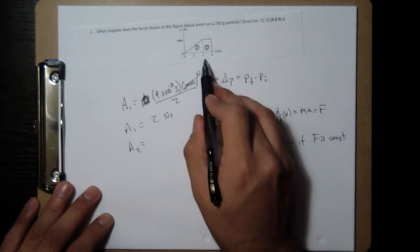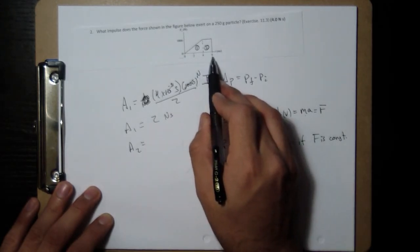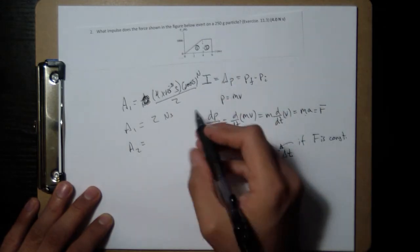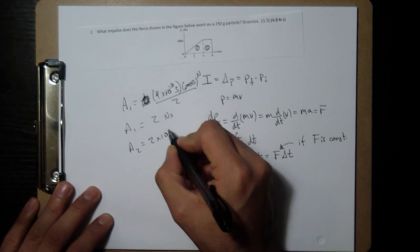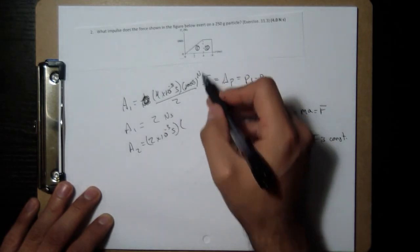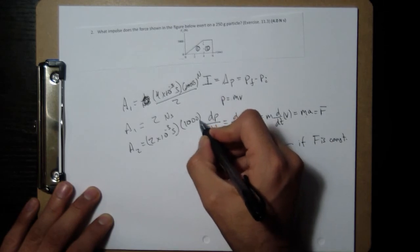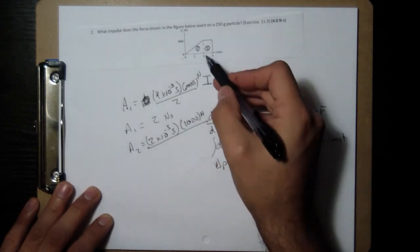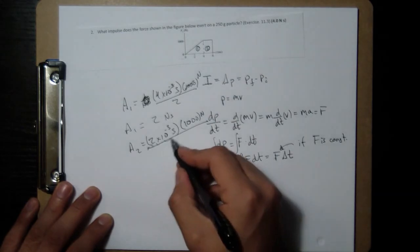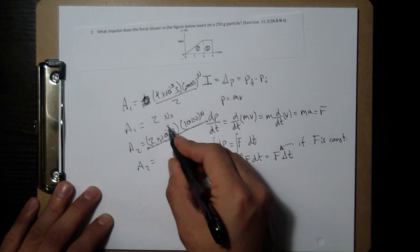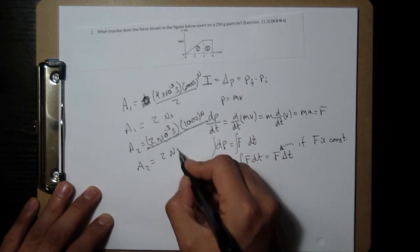The area for the second part is going to be 4 to 6, sorry, that's a time of 2 milliseconds. So 2 times 10 to the negative 3 seconds, similar. And height, 1000 Newtons. But this one, we don't divide by 2 because it's a rectangle. So forget that part.